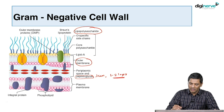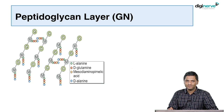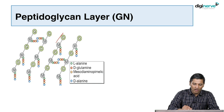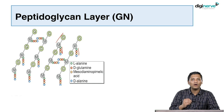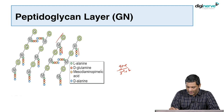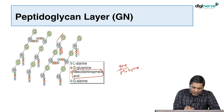Gram-negative organisms do not have teichoic acid, and the peptidoglycan layer is just one to two layers thick. It is again composed of alternate molecules of NAM and NAG, but the difference is at the third position of the side chain: in gram-positive it was lysine, whereas in gram-negative the amino acid at the third position is meso-diaminopimelic acid.